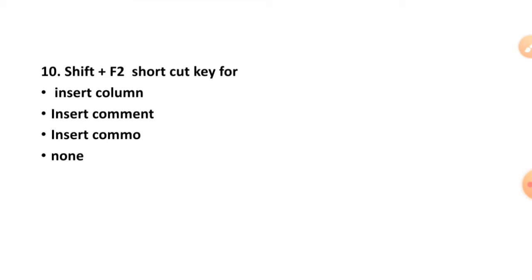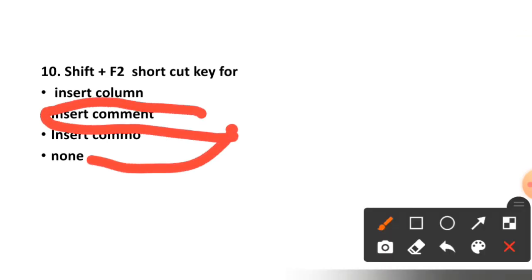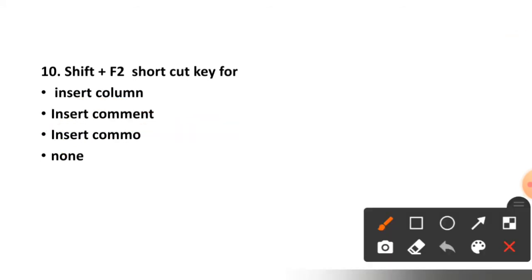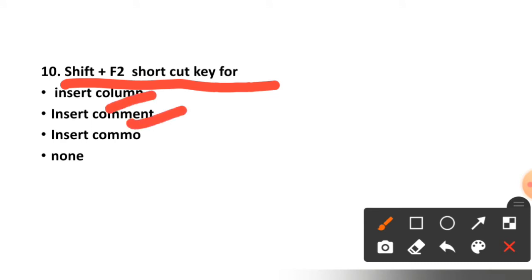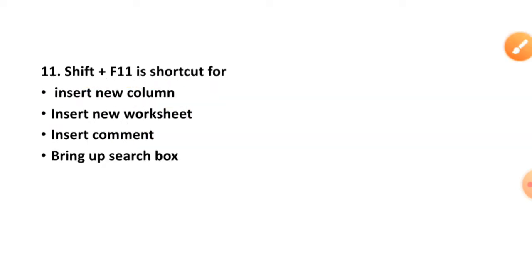Question number ten: Shift plus F2 is a shortcut key for what? Insert column, insert comment, or none? The correct option is option number two, insert comment. Shift plus F2 shortcut key is for insert comment.